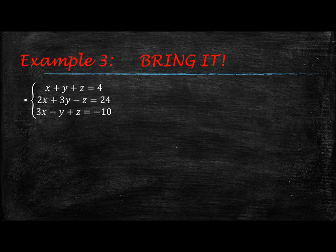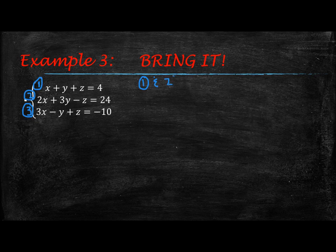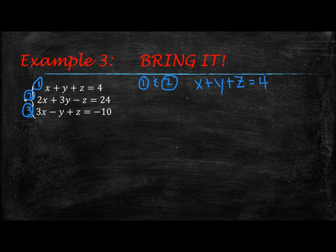Alright, let's do a super hard problem. Here we've got x plus y plus z equals 4, 2x plus 3y minus z equals 24, and 3x minus y plus z equals negative 10. So at this point, I'm going to have to get two sets of equations down to only two variables. I'm looking at equation 1 and equation 2, and then we'll call this equation 3.